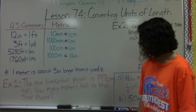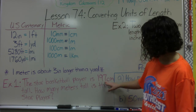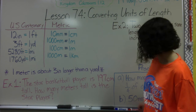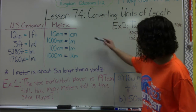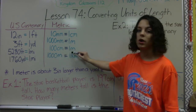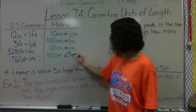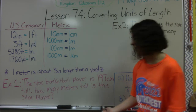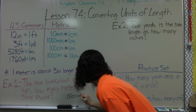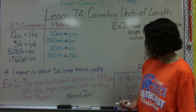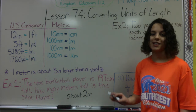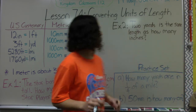197 centimeters is close to 200 centimeters, and we're going to estimate. Since 100 centimeters is one meter, we know he's more than one meter tall, and he's almost 200, so he's almost two meters tall. The answer is about two meters tall. The exact measurement would actually be 1.97 meters.